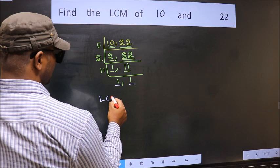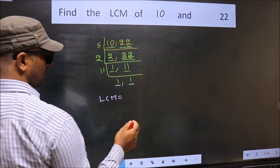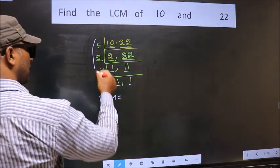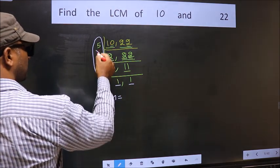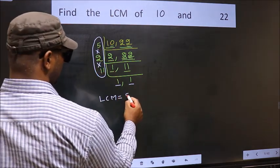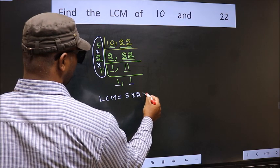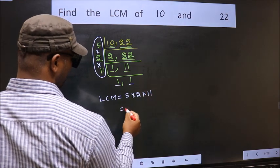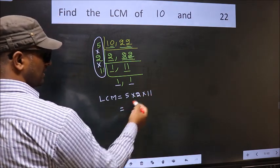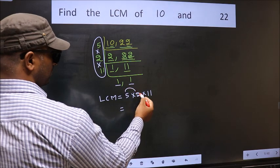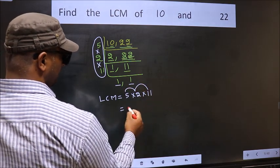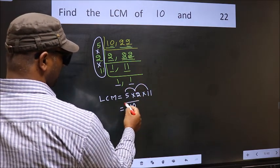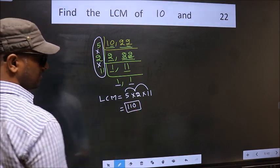So our LCM is the product of these numbers. So let us multiply these numbers. 5 times 2 is 10, times 11 is 110. So 110 is our LCM.